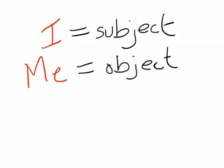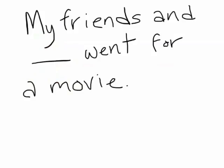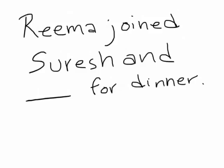Let's take a look at two more sentences just to clarify. Fill in the blank with the appropriate personal pronoun. In the first sentence, 'my friends and blank' represent the subject because they went for the movie. Since 'I' replaces the subject, it is the correct pronoun to use. In the second sentence, 'Suresh and blank' represent the object because they were joined by Rima for dinner. We know that only 'me' can be used in place of the object, hence 'me' is the correct pronoun.